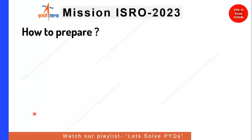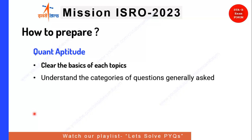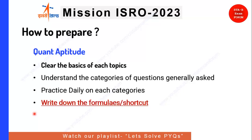How to prepare the Quantitative Aptitude section? First, clear your basics of each topic and understand the category of questions generally asked, then practice daily on each of those categories. You can practice with any book, mock test, or test series. Most importantly, write down the formulas and shortcuts you have learned, and revise each topic — revision is a must for every exam.